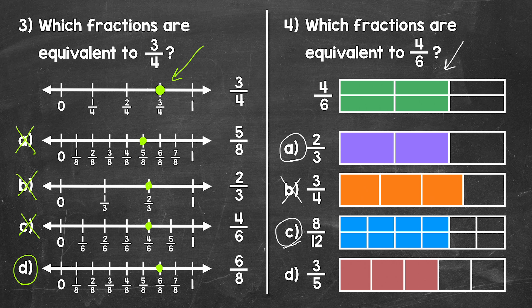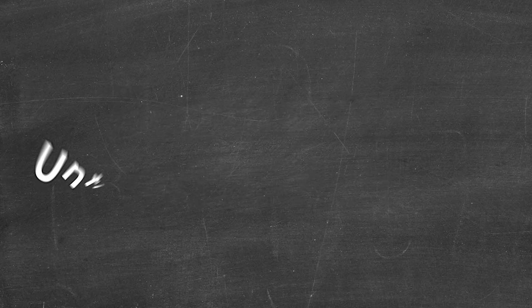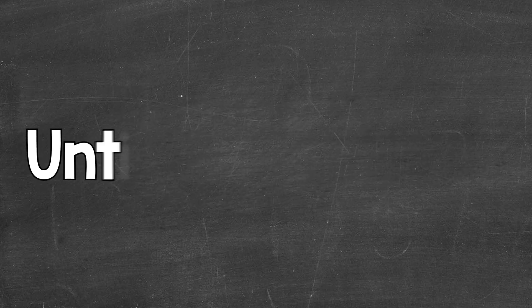And then lastly, choice D, we have three fifths. Is three fifths an equivalent fraction? No, three fifths is less than four sixths — less of the rectangle is shaded in, so this is not equivalent. So there you have it — some examples of identifying equivalent fractions. I hope that helped. Thanks so much for watching. Until next time, peace.